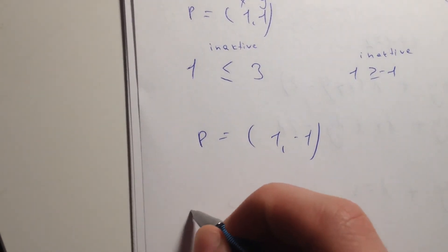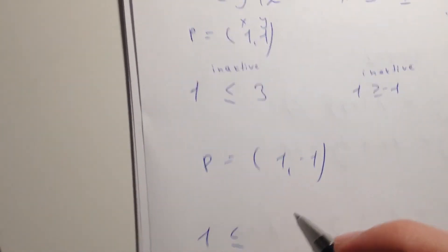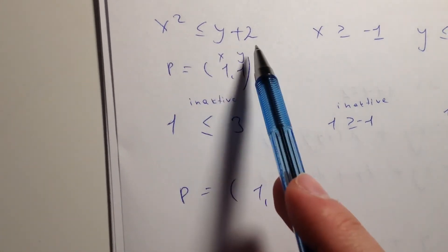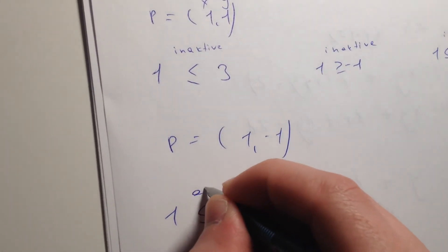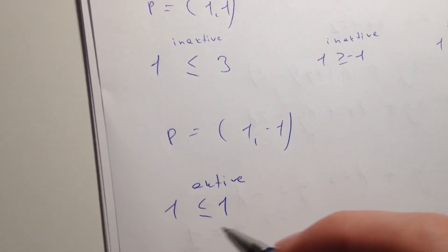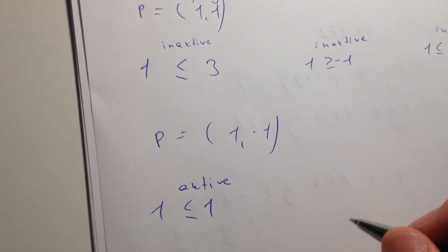Here we have again minus 1 plus 1, it's active. You can see it's active because our constraints are equal.